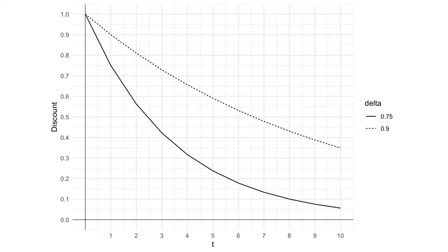This figure illustrates the effect of exponential discounting. The figure plots the size of the discount as a function of t for an exponential discounter with delta equals 0.9 and delta equals 0.75.